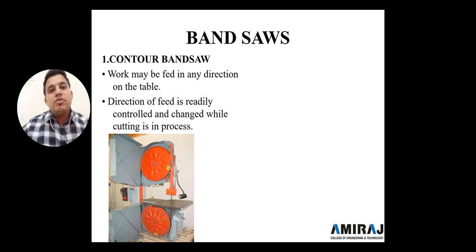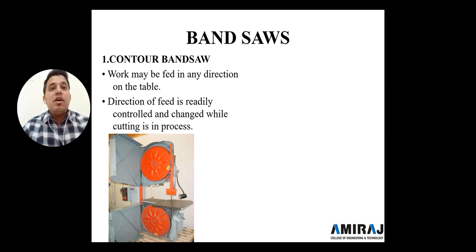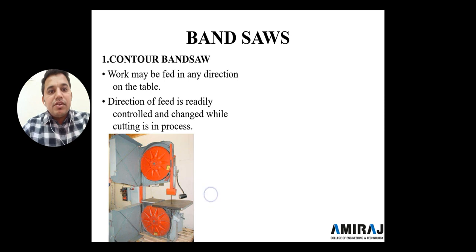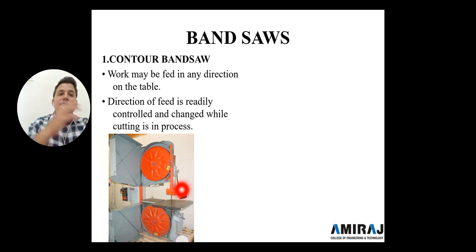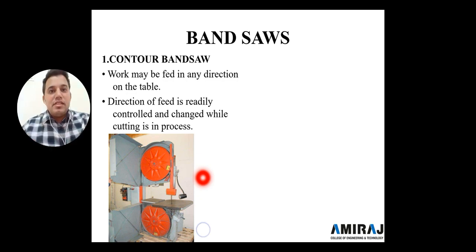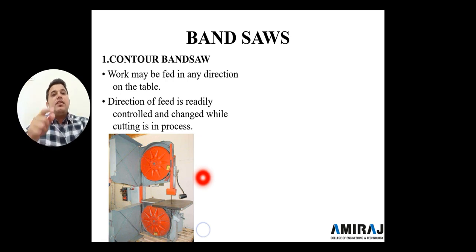The first type is the contour band saw. The workpiece may be fed in any direction on the table, meaning we can provide feed from any direction — all sides of the work table are open. The direction of feed can be rightly controlled and changed while cutting is in process. For typical or unusual shapes — for example, a mango shape on sheet metal — we can utilize the contour band saw.